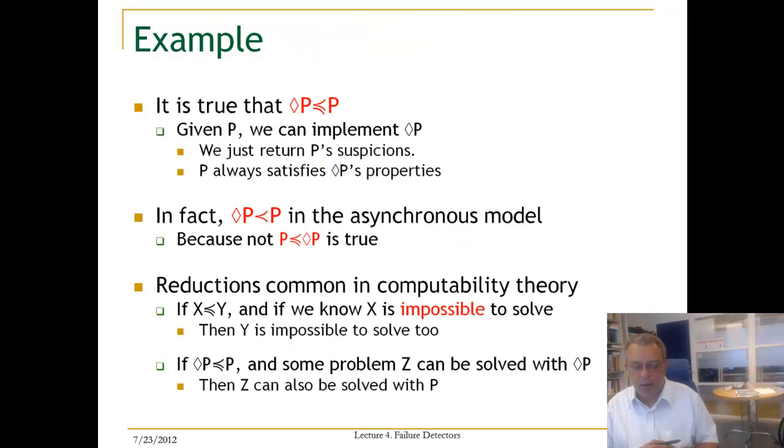So let us now relate reducibility to our different kinds of failure detectors. So we know that if we have P, we can implement diamond P, eventually perfect failure detector, because P always satisfies diamond P's property.